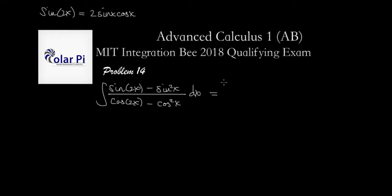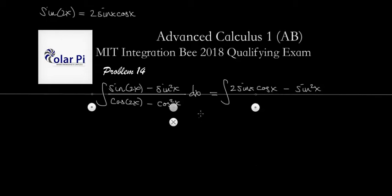The numerator is going to be 2 sine x times cosine x, and then minus sine squared x. And then the denominator. Now that I see a lot of sines in the numerator, it's clear that the option we should take for cosine of 2x is the one that says that cosine of 2x equals 1 minus 2 sine squared x.